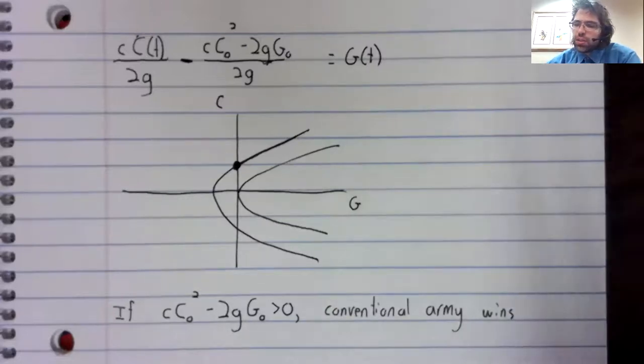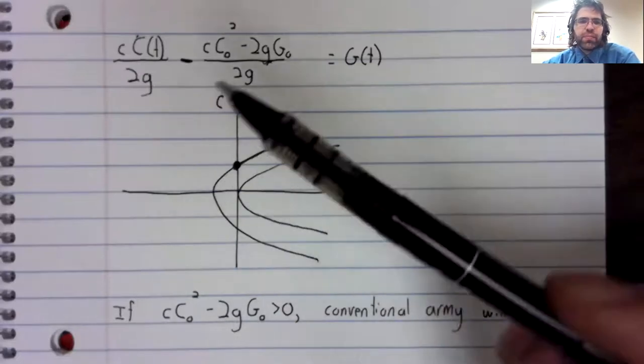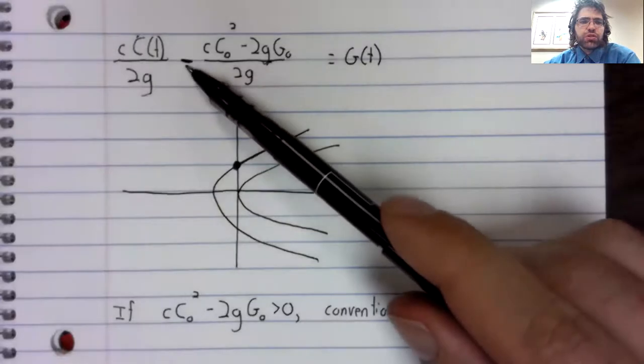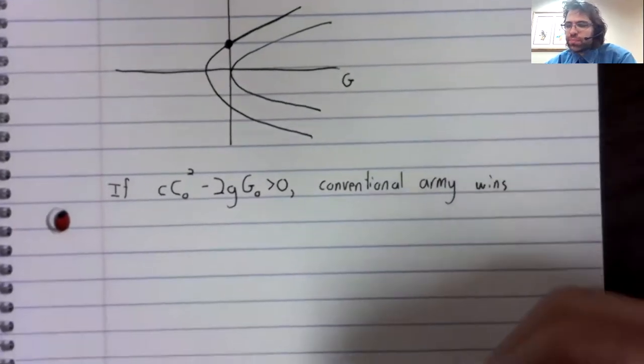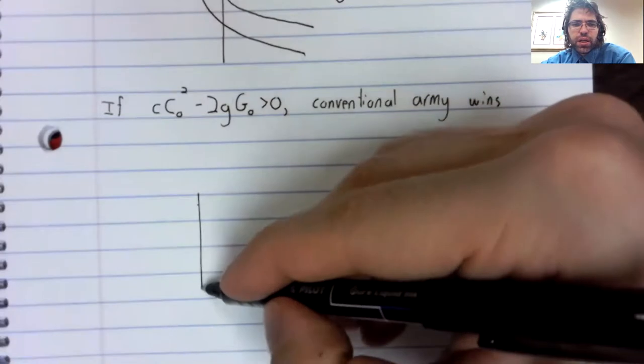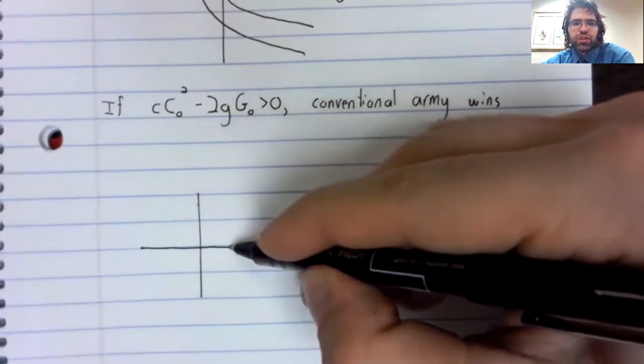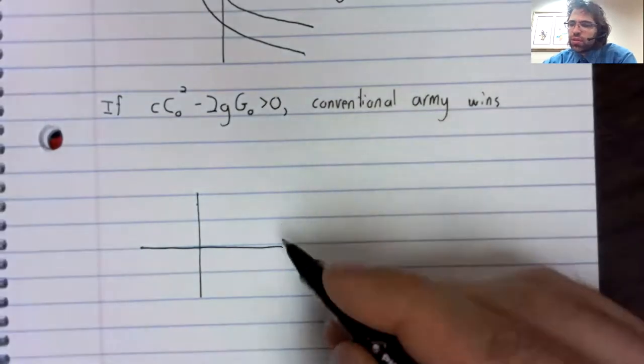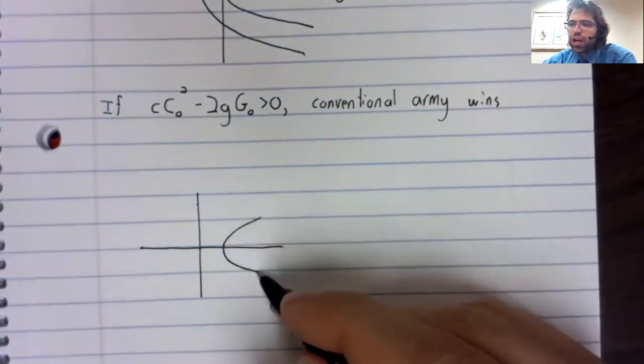Conversely, suppose that this is negative. Then this subtraction is really addition. And the horizontal shift is to the right.